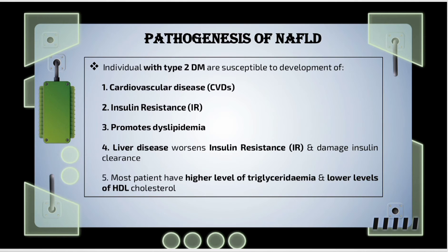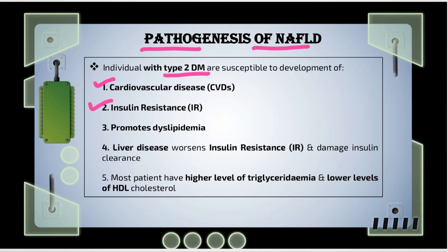Now let's discuss the pathogenesis of NAFLD. Any individual with type 2 diabetes mellitus is susceptible to the development of cardiovascular diseases and insulin resistance. Insulin resistance is a condition where cells in the muscles, fat, and liver don't respond to insulin and cannot easily take up glucose from the blood, ultimately causing an increase in blood sugar levels.